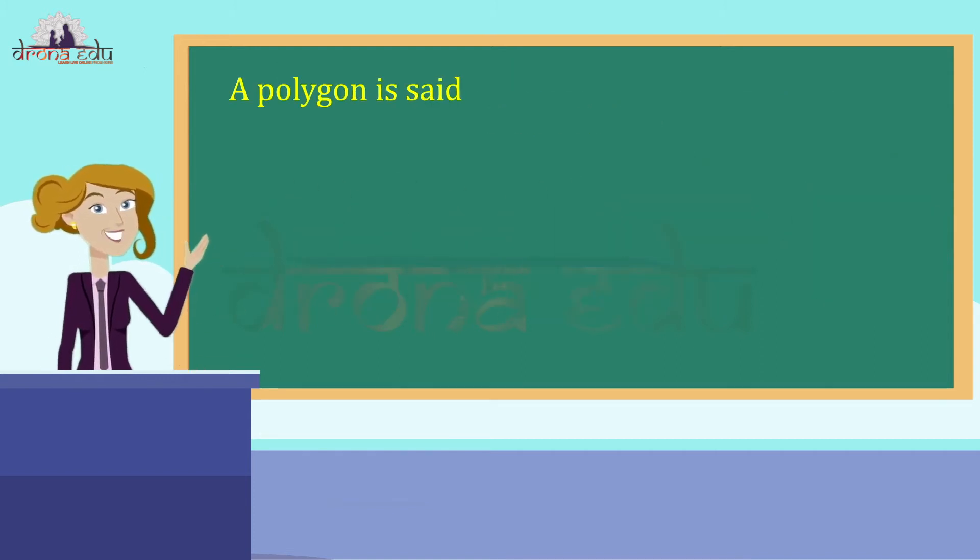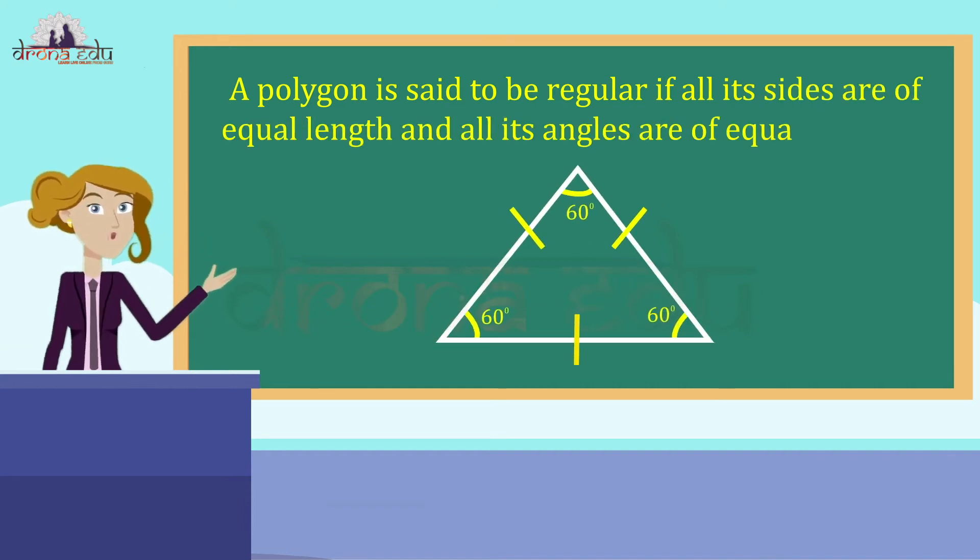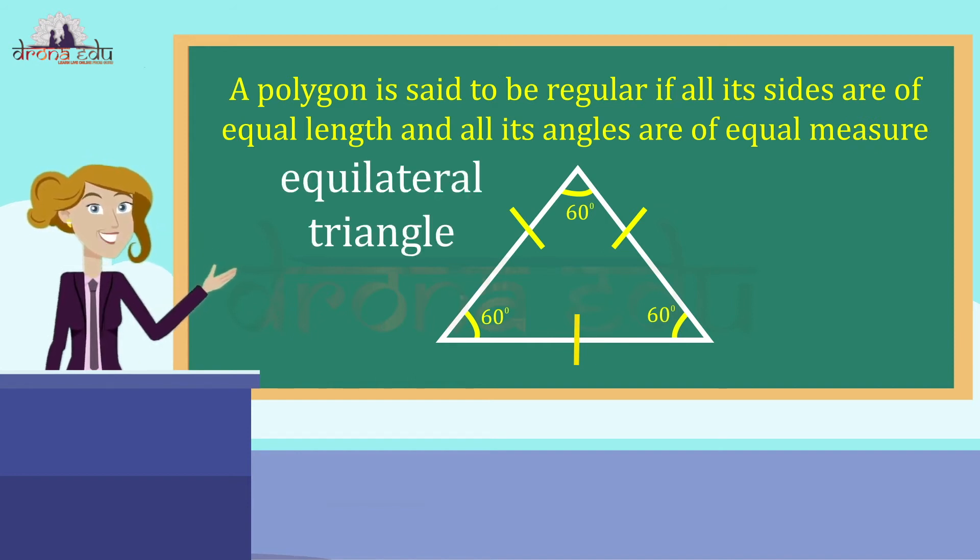A polygon is said to be regular if all its sides are of equal length and all its angles are of equal measure. Thus, an equilateral triangle is a regular polygon of three sides.